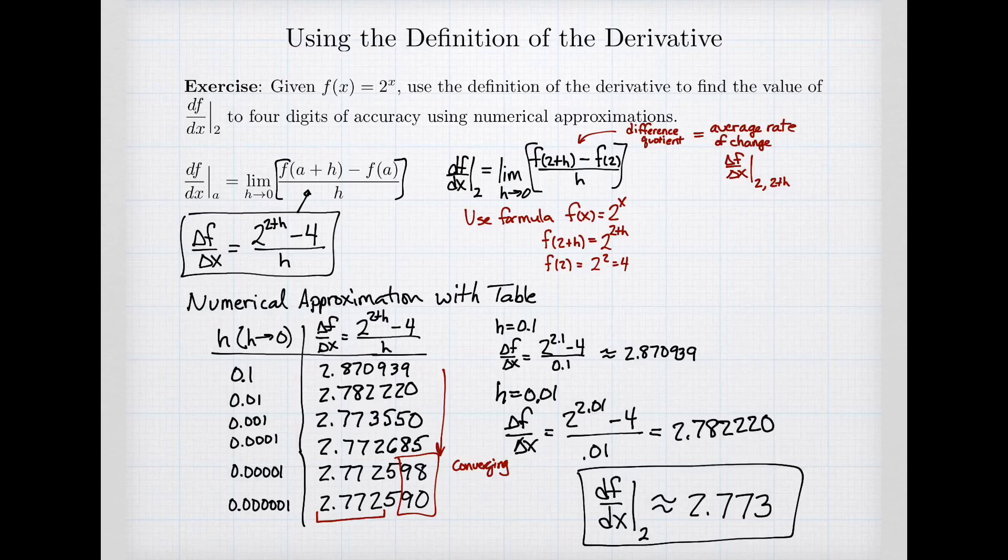Again, the first step is to calculate the formula for the average rate of change. And then I'm going to use a table letting h go to zero. And I'm looking to see what value is the sequence converging to? I'm looking for my number to converge to some value. And then finally, I interpret the value that it's converging to to say what the actual value is.